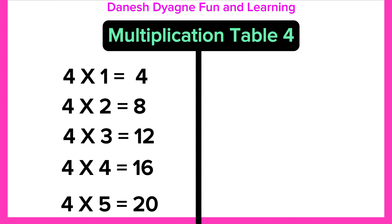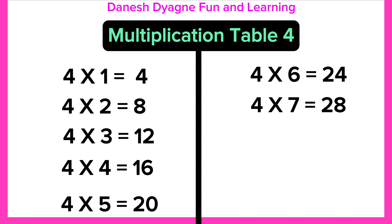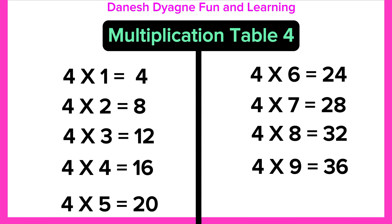4 times 5 equals 20. 4 times 6 equals 24. 4 times 7 equals 28. 4 times 8 equals 32. 4 times 9 equals 36. 4 times 10 equals 40.